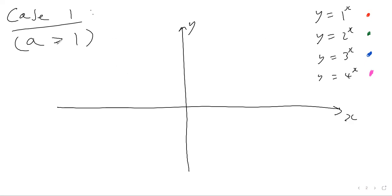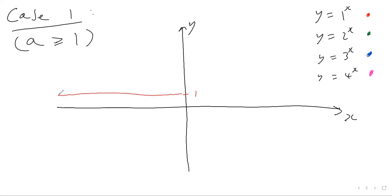So for example, this first graph here: y equals one to the power of x. We'll look at this red one first. Now, one to the power of any number is just the number one. So this first graph would just be a straight, flat, horizontal line at y equals one. So that's our first graph — y equals one to the power of x.